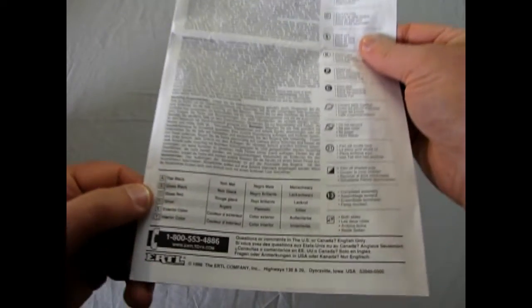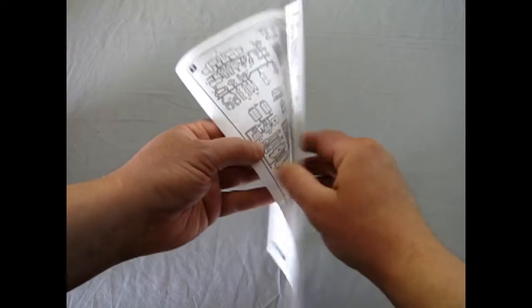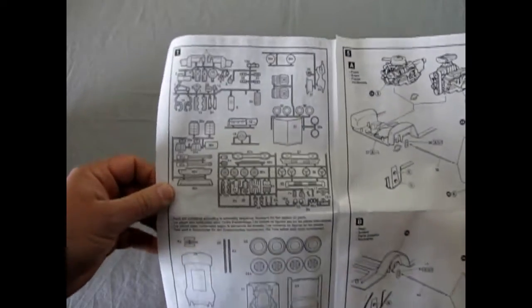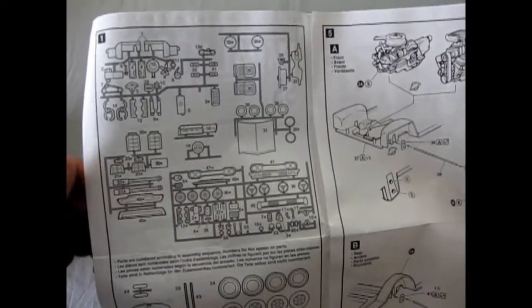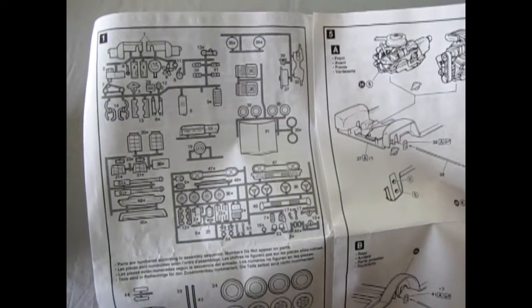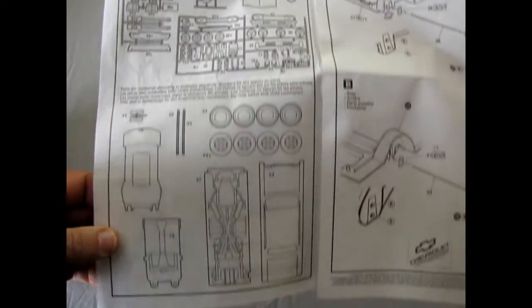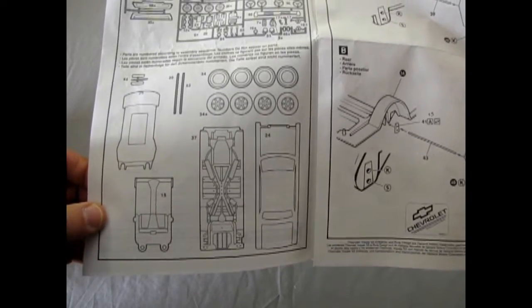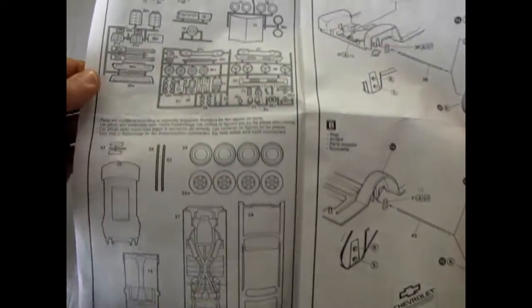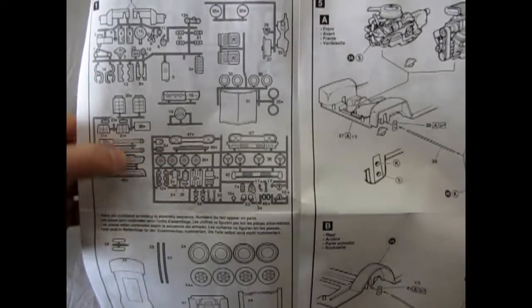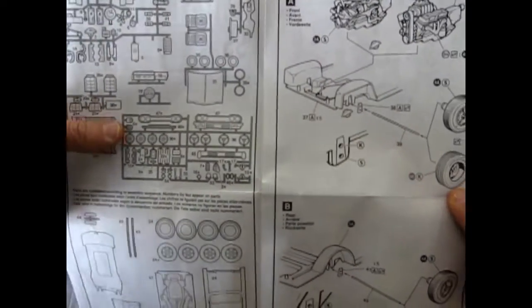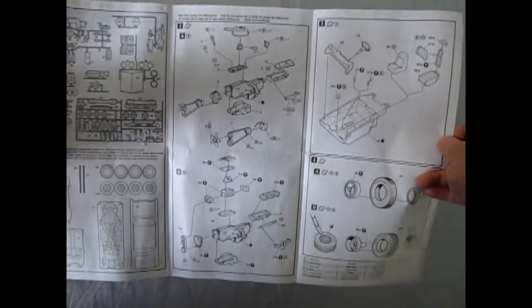Okay looking at the instructions they do have some call outs for the colors down here at the bottom and they give you the part explosion tree so there's a body and the interior tub, wheels, grills, hubcaps, you name it.